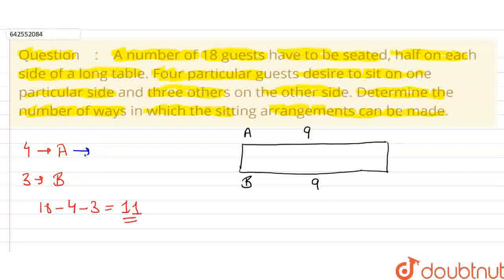So, in the A side, there will be a total of 9 guests. 4 are already fixed. So, we can only arrange 5 in this row. And in the B side, 3 is already fixed. So, we can arrange 6 guests on this side.